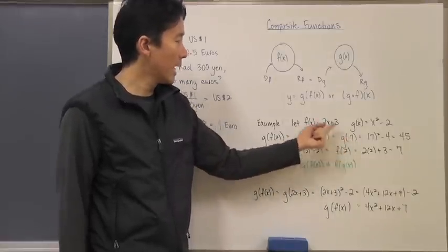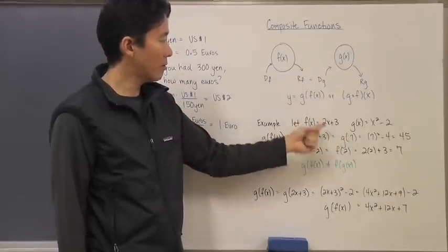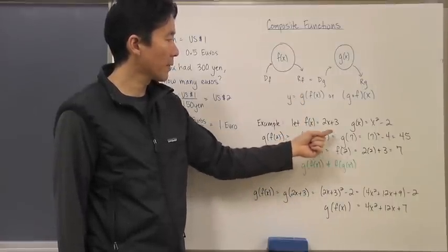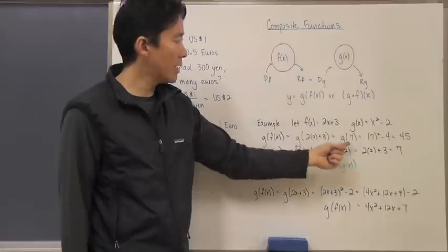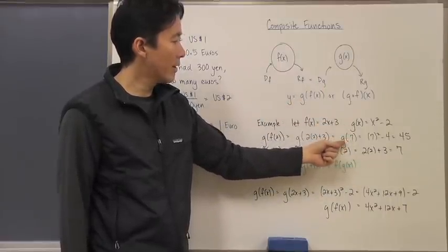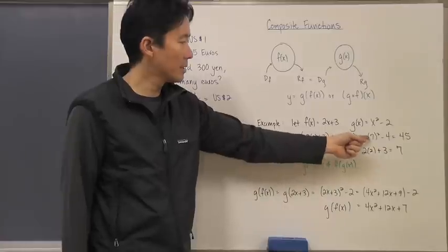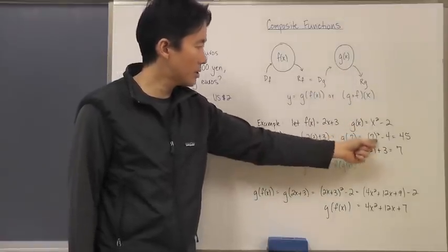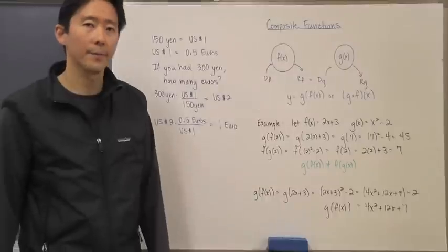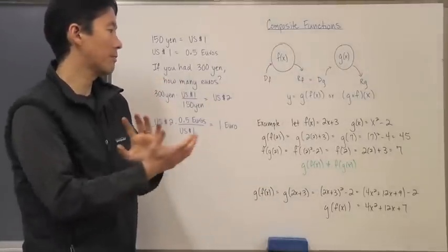That becomes the range value of this function F evaluated at 2. That then becomes the domain value for G. So I then evaluate G at G of 7. G of 7 would then be equal to 7 squared minus 2, which is going to be 47. Now let's say for example we go ahead and switch those two around.